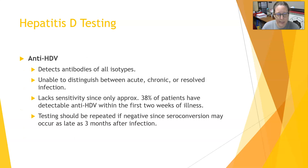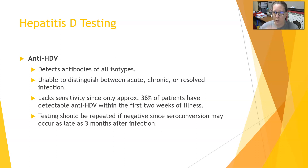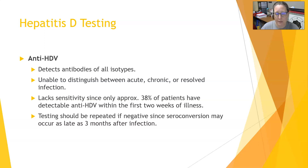How do we test for hepatitis D? There is one test: the anti-HDV antibody test. It detects antibodies of all isotypes, meaning IgG, IgM, and others. It is unable to distinguish between an acute, chronic, or resolved infection — in an acute infection you would see an IgM spike, and in chronic or resolved you would see IgG titers, but since this test detects all isotypes together, you cannot distinguish between them. It also lacks sensitivity, as only approximately 38% of patients will have detectable anti-HDV antibodies within the first two weeks of illness.